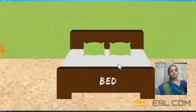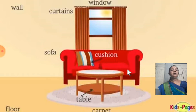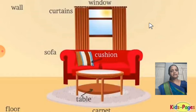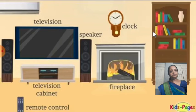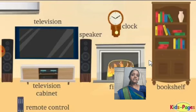Now, things. Bed, carpet. See, so many things you can see in your room: curtain, sofa, cushion, table, carpet. All these are things. See, so many things again: television, speaker, clock, remote control, bookshelf. So all these are things.